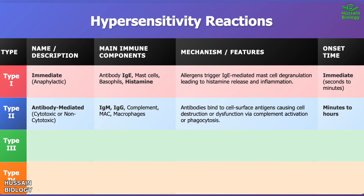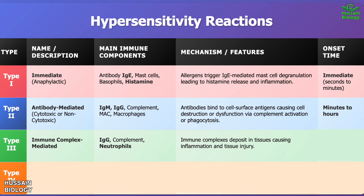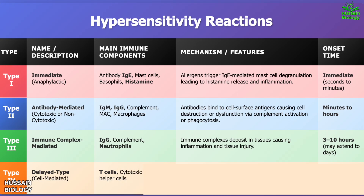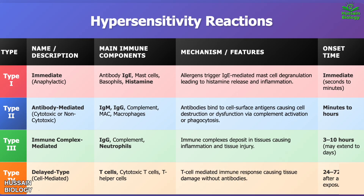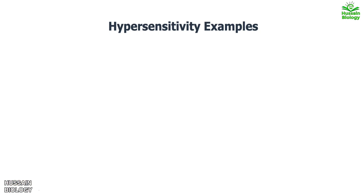Type 3 hypersensitivity, also known as immune complex-mediated hypersensitivity, involves IgG antibodies, complement, and neutrophils. Immune complexes deposit in tissues leading to inflammation and tissue injury, developing within three to ten hours and potentially extending to days. Type 4 hypersensitivity, known as delayed-type or cell-mediated, involves T-cells including cytotoxic T-cells and T-helper cells. T-cell mediated immune response causes tissue damage without antibodies, appearing 24 to 72 hours after antigen exposure.